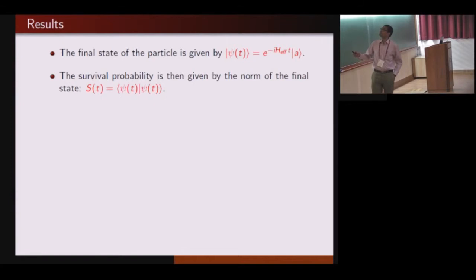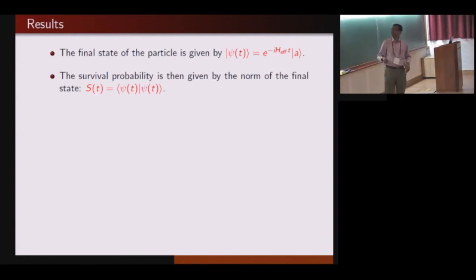That is the final state, this evolution operator acting on the initial state A. We can guess why H_eff has to be non-Hermitian. The norm of the wave function, which says the probability of the particle being at any point on the lattice, should decay with time. So H_eff must have an imaginary part, so that this exponential decay is present.